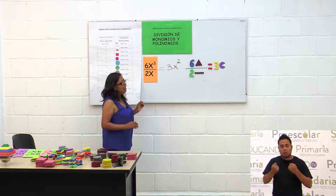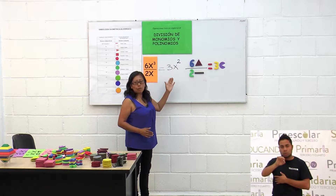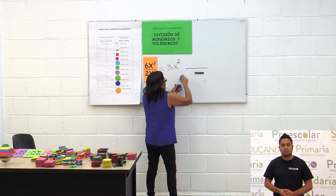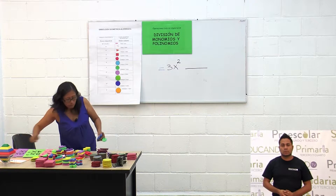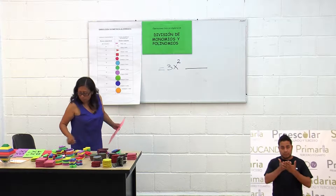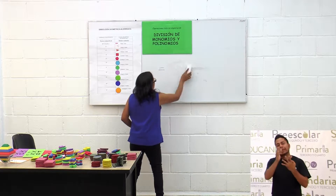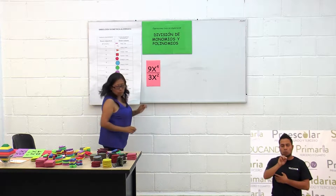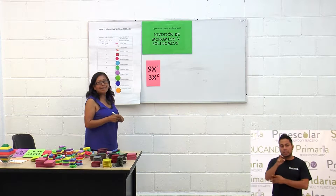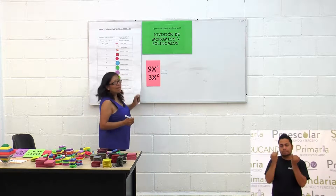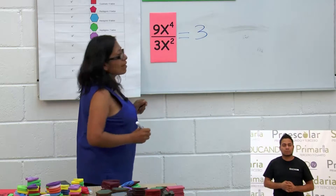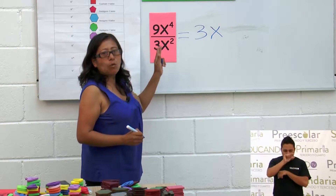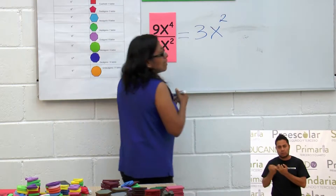Vamos a hacer la otra división de monomio: 9x cuarta entre 3x cuadrada. Esto es igual a 9 entre 3, que es 3. X cuarta entre x cuadrada: ponemos la x y se restan los exponentes, 4 menos 2 es 2. Nos queda como 3x cuadrada.